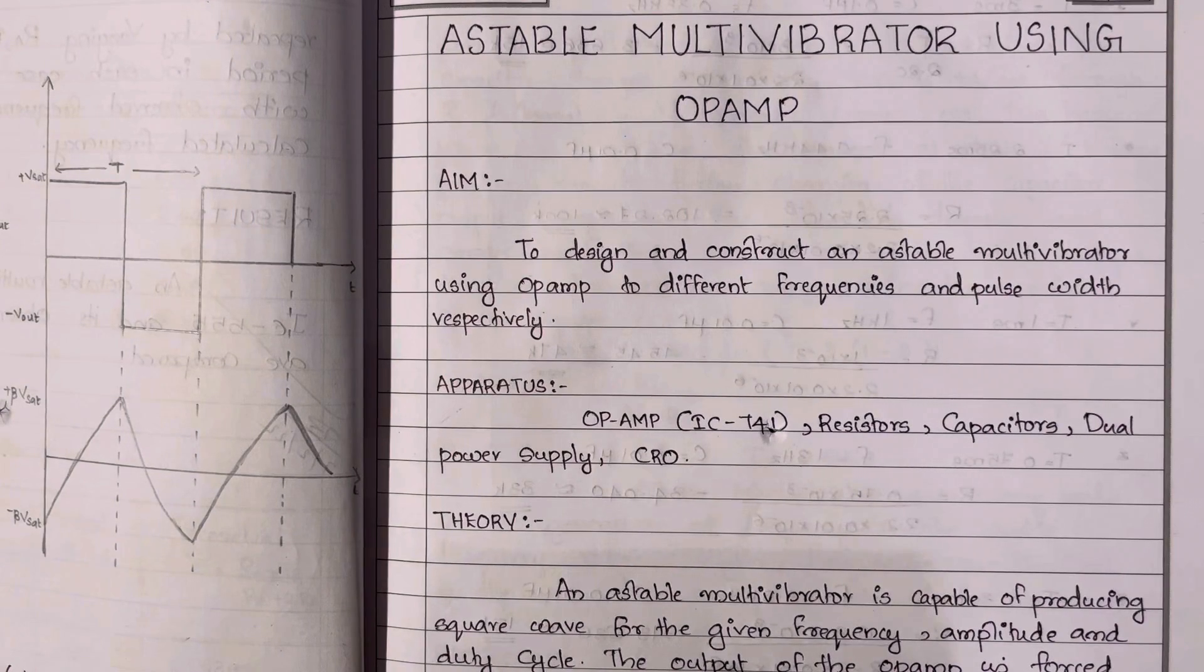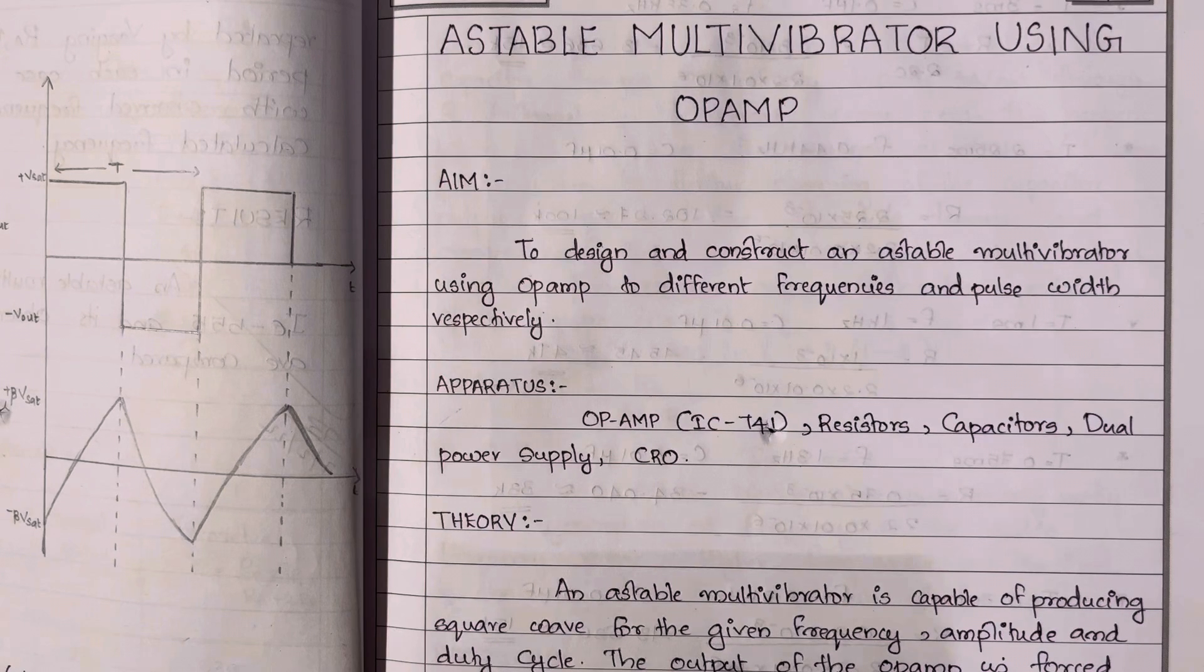Earlier we had discussed astable multivibrator circuits using transistors, but in such circuits the main problem is it requires many additional components. So today let's switch over to a comparatively simple astable multivibrator circuit employing operational amplifier or op-amp.